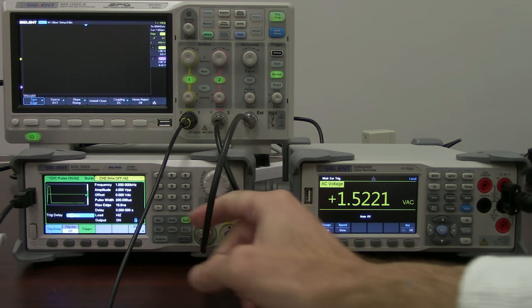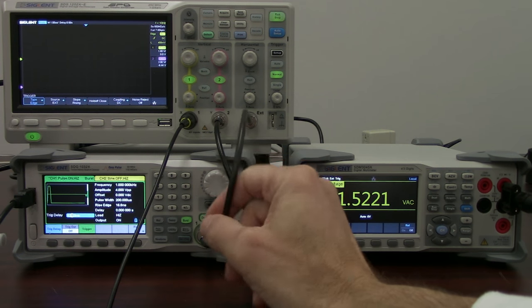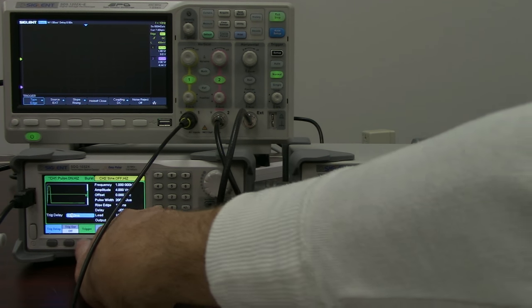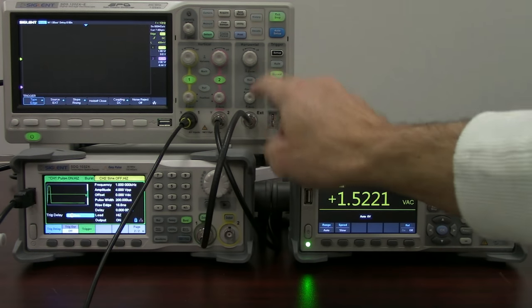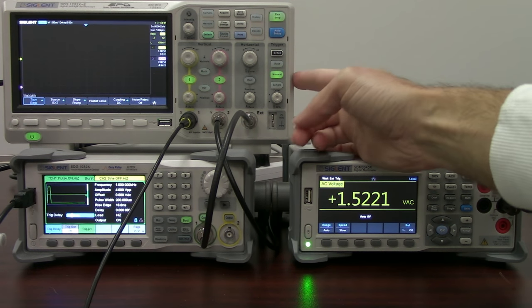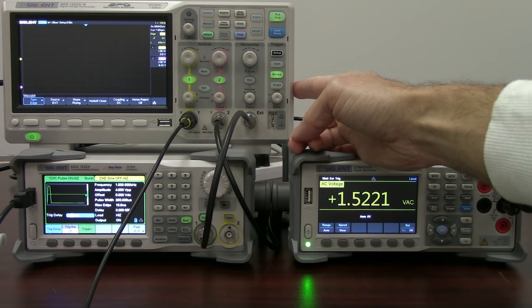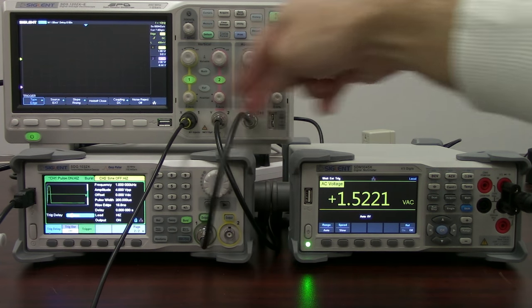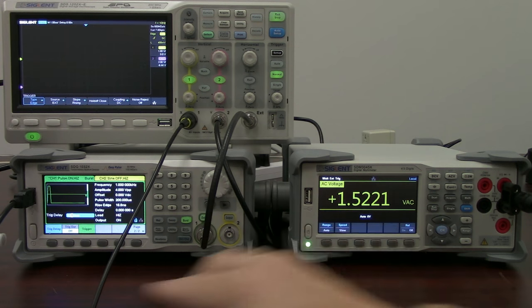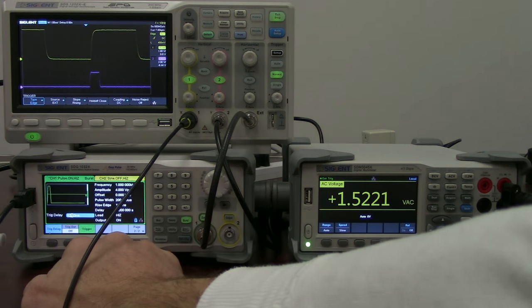I'm using the SDG1032X waveform generator simply to create that external burst. I'm going to manually control that by pressing this trigger button here. When I press the trigger button, a signal is going to go to the external trigger that's going to meet the particular trigger configuration that I have set for the oscilloscope. It's going to then measure these two channels on the scope as well as cause an updated reading on the voltmeter.